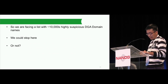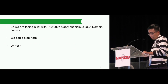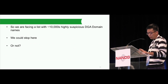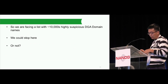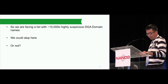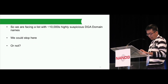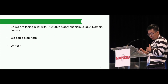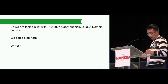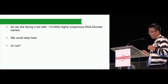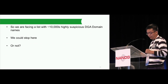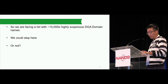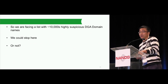So we are looking at a list of about 10,000 highly suspicious DGA domains. It is relatively safe to use this list as a potential blacklist, but we want to go even further — we want to pair the DGA domains to malware samples so we can be absolutely sure. And Qitian will talk about that.